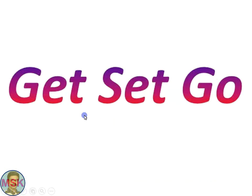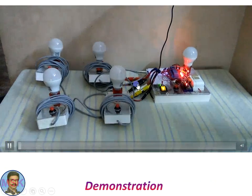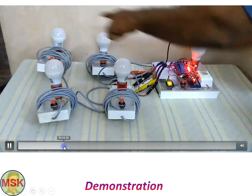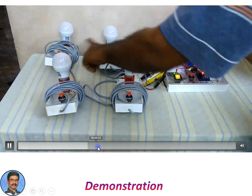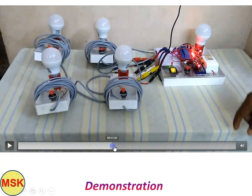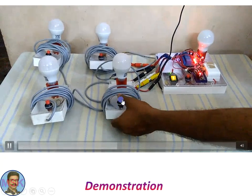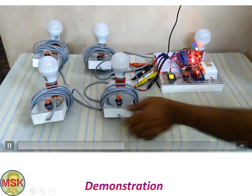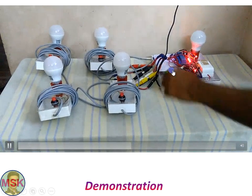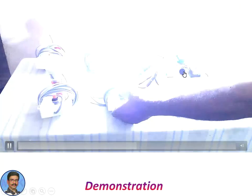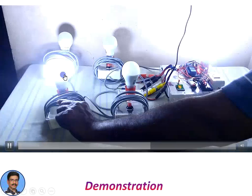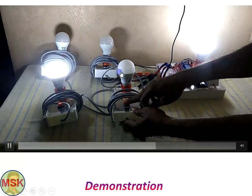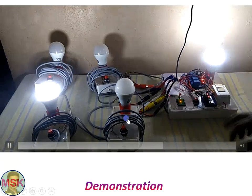Now we will see the setup in action. Power on. These are Teams A, B, C, D, and the master console indicator lights. Pressing Team B's button — the bulb is not glowing because the toggle switch is not on. Now the toggle switch is on. B is pressed, and once the reset button is pressed, the setup is ready for the next action. Now A is pressed — even if B, C, or D are pressed after that, there is no effect.